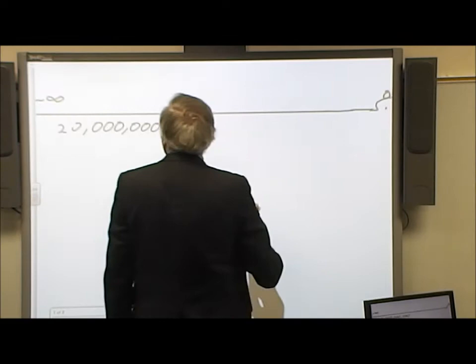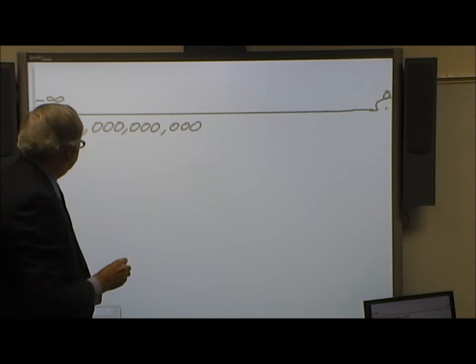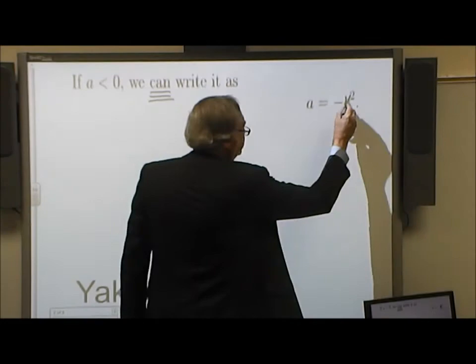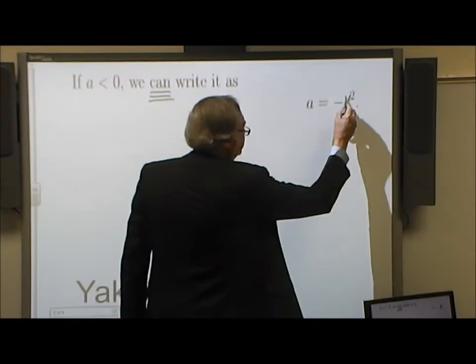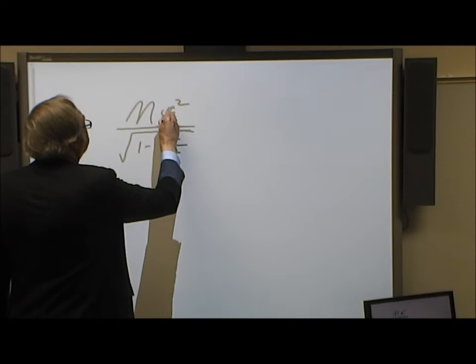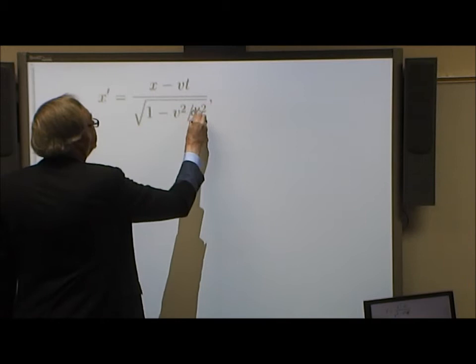So now, we're not truncating the line. We're using the whole line. And this is infinity. Minus infinity. This becomes infinity. This becomes infinity. This is infinity.